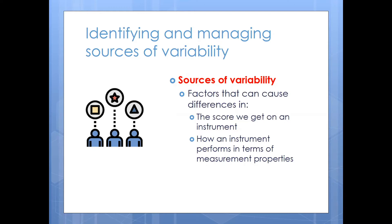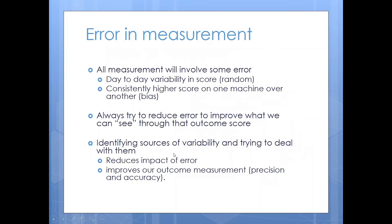What are they? Well, there are factors that can cause differences in the score we get on an instrument, or how an instrument performs in terms of its measurement properties. Error in measurement is something we always expect — it could be random day-to-day variability in a score, or consistently higher scores from one rater or one machine over another. We always try to reduce both types of error to improve what we can see through the outcome measurement instrument score. Identifying these sources of variability and dealing with them will reduce the impact of that error and improve our outcome measurement in terms of precision or accuracy.